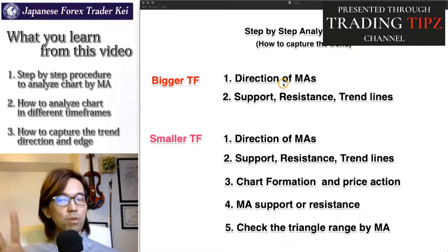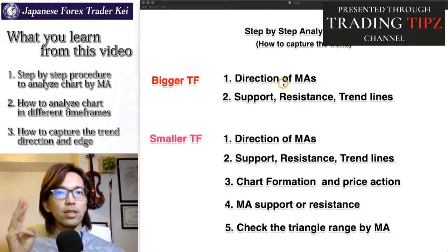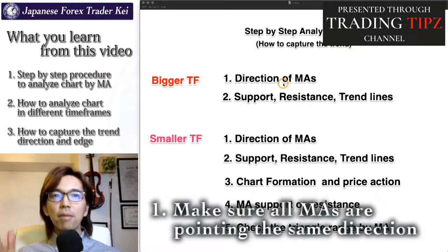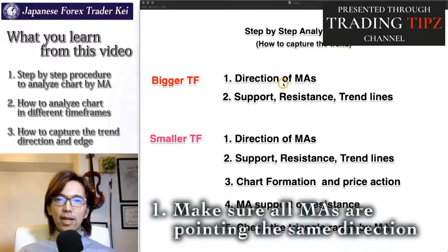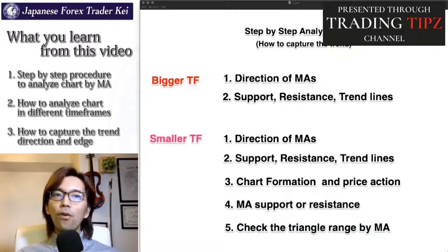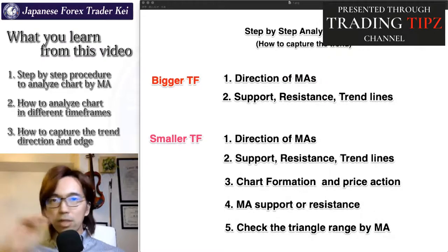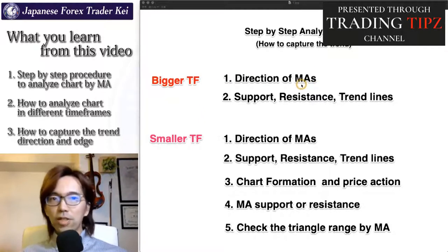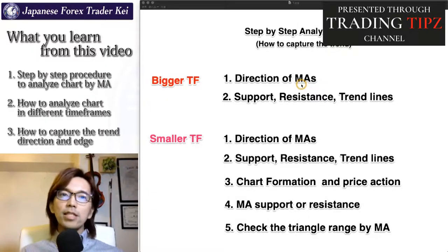If you are showing 2 or 3 moving averages, like 20, 75, and 200, make sure they are all pointing towards the same direction in the bigger time frame first — like a daily or weekly chart. If they are not pointing to the same direction, that simply means it's not a trade chance. So you have to wait until they all point towards the same direction, or look at other pairs.